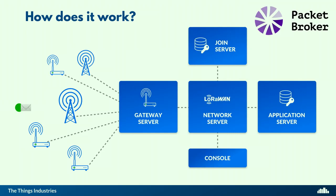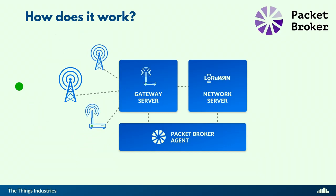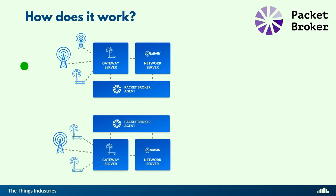Here's how it works today: in a standard cluster running The Things Stack, your device sends a message, picked up by gateways, sent to a gateway server, and ends up in the application server. To enable Packet Broker, we add a Packet Broker agent — a client component that runs in your network and interacts with Packet Broker. Packet Broker agents will become part of The Things Stack open source as well. If another network also has Packet Broker agents, they can start exchanging traffic with each other.